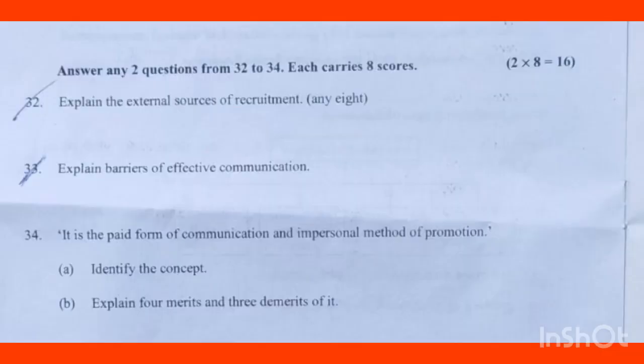Answer any two questions from 32 to 34, each carries eight scores. Explain the external source of recruitment, any eight. This is an important question and answer. External source is the selection of employees from outside the enterprise, known as external recruitment.